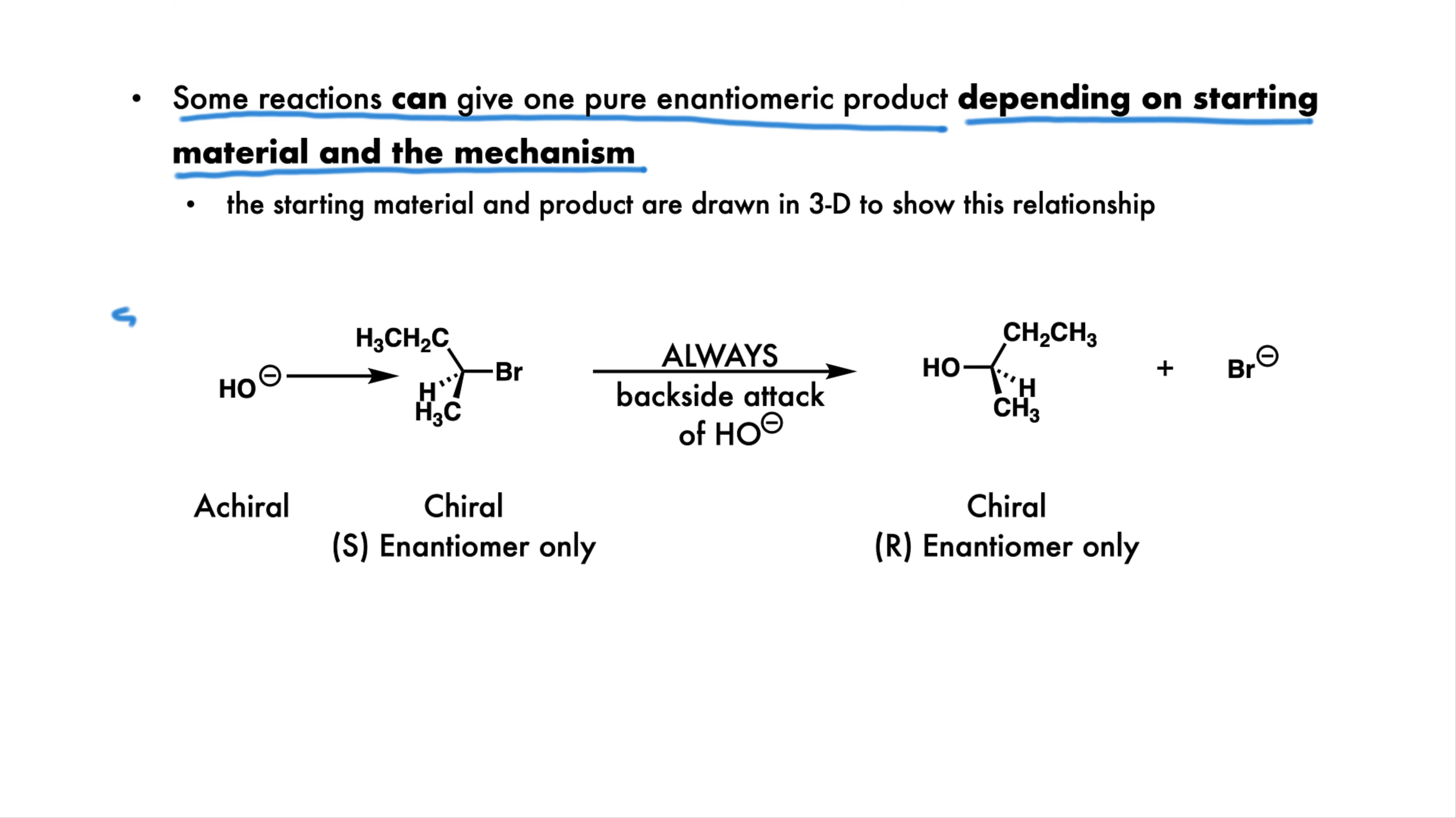This reaction is called an SN2 reaction, and we study it in topic 7.1. Don't worry about it right now. If we start with the pure S enantiomer of the starting molecule, then we get only the R enantiomer of the product. This is because the mechanism of the reaction always requires that the hydroxide come in from the backside, and we invert the stereochemistry. Note that we usually draw the stereochemistry of both the starting material and the product to show this relationship. So one enantiomer of a chiral starting material can sometimes produce one enantiomer of the product. It depends on the starting material and the mechanism.